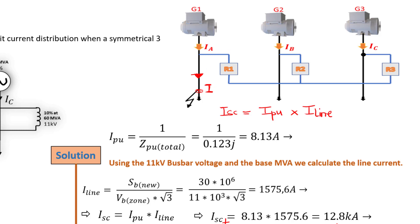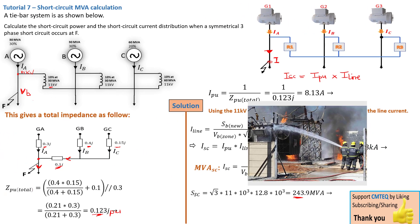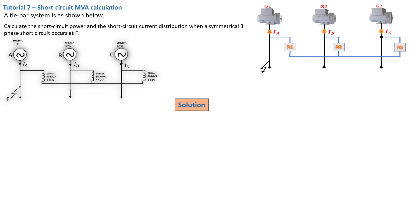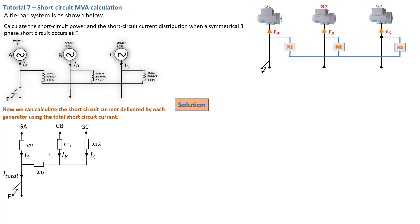That is a lot of power, so you need to have an appropriate circuit breaker to handle that — otherwise it's going to be fire all over the place. Now we can go ahead and find the currents distributed by each generator. Now that we know the total short circuit current at this point, it becomes much easier to deduce the short circuit current being distributed by each one of these generators.